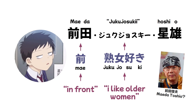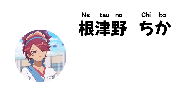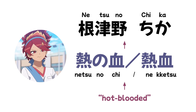Moving on to other students at Komi's school. Netsu no Chika's name comes from the phrase 'Netsu no Chi' or 'Nekketsu,' meaning 'hot-blooded.' Like that suggests, Netsu no Senpai is a very passionate person when it comes to sports and competition — even her hair is fiery.